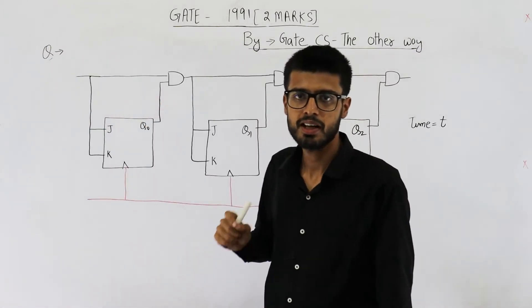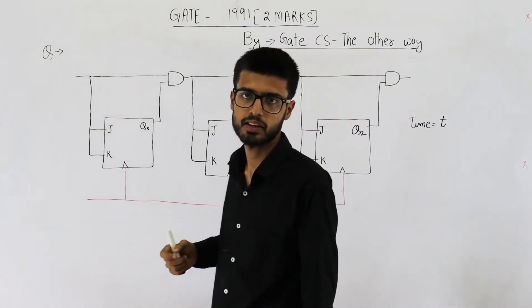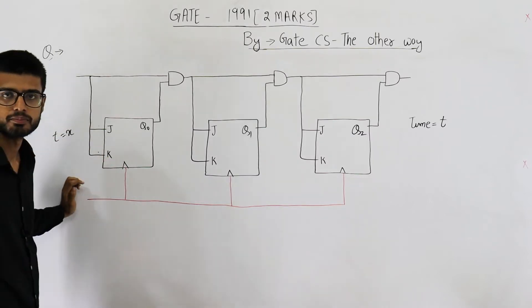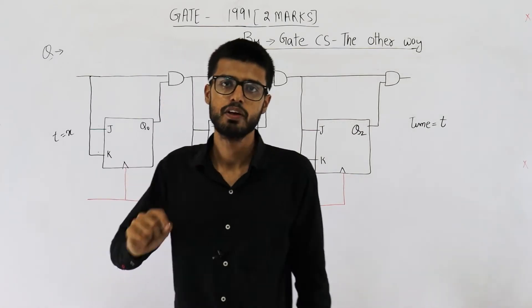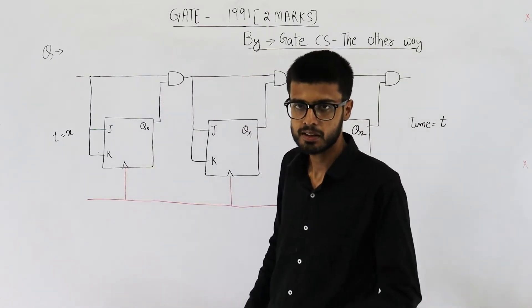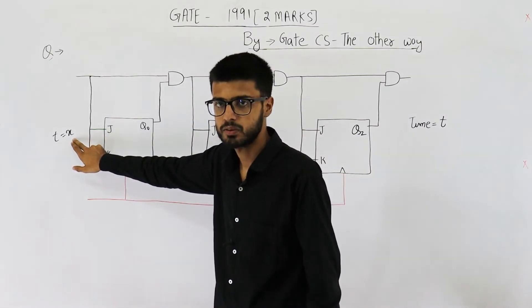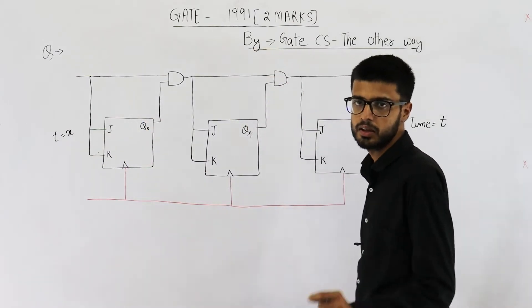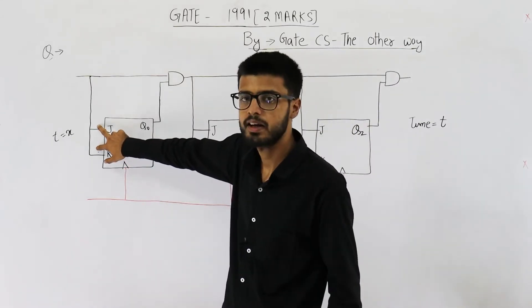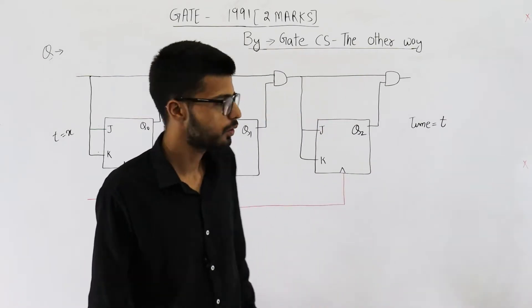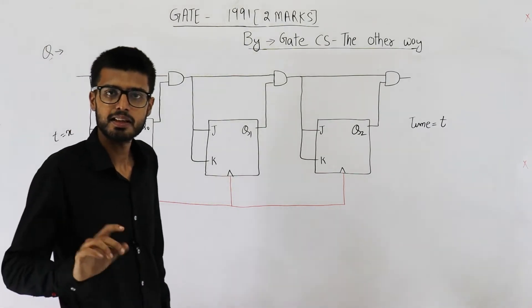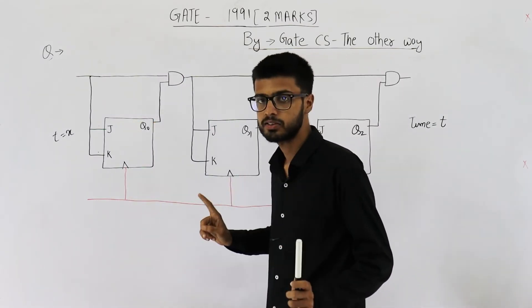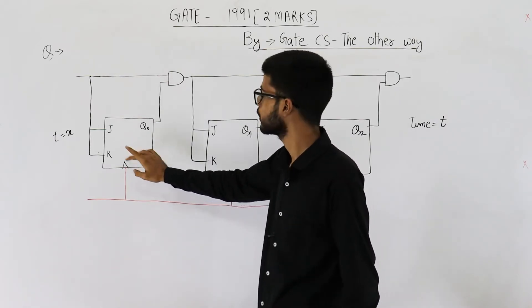When you say setup time is equal to zero, that does not mean that they will not take any time. Setup time is a completely different thing. Setup time means the minimum amount of time that you need to wait for before giving a clock signal. Sometimes what happens is, if inputs are available at time t equal to x and immediately at that same time you generate a clock signal, what could go wrong is these inputs are not yet registered. In the question, they are saying setup time is negligible, meaning we can consider setup time to be zero — we can give the clock immediately. But that does not mean that this gate is not going to take any time. It will still take 10 nanoseconds to generate the output.